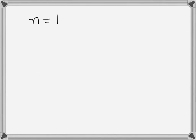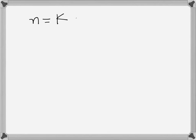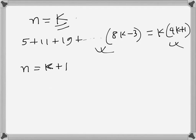We assume that for any other natural number n greater than 1, let's say k, this relationship is true. So we assume that for n equal to k: 5 plus 11 plus 19 plus ... plus (8k minus 3) equals k(4k plus 1). Once we assume this, we try to prove that left hand side equals right hand side for n equal to k plus 1.